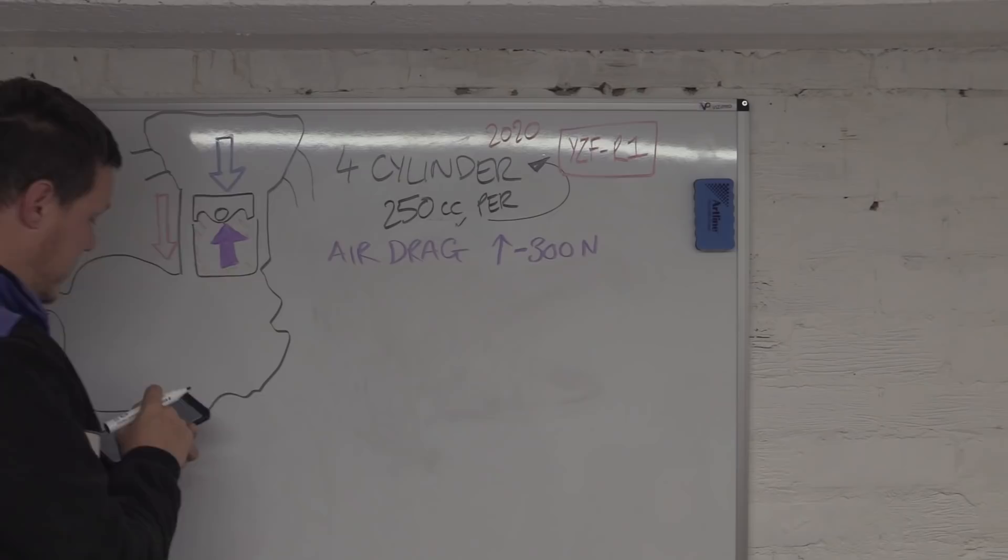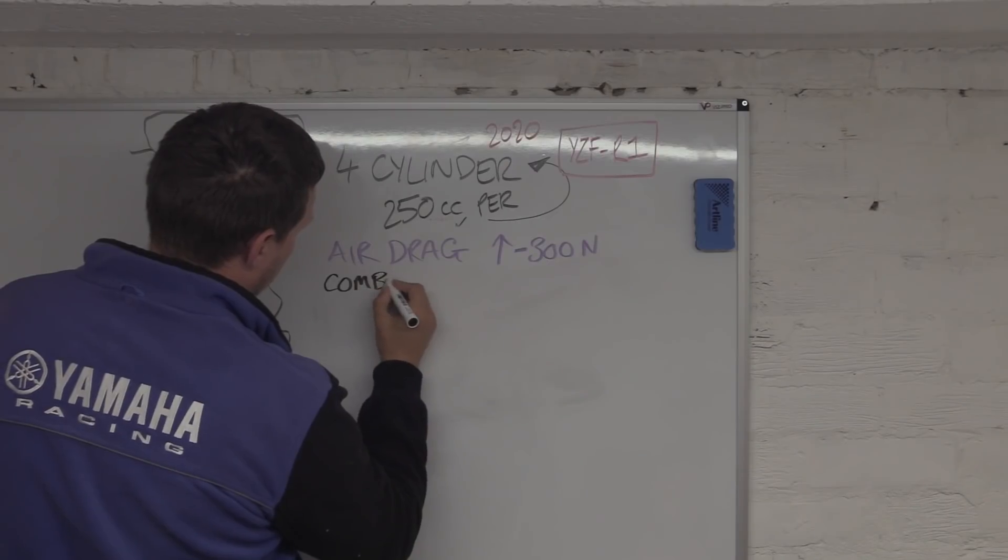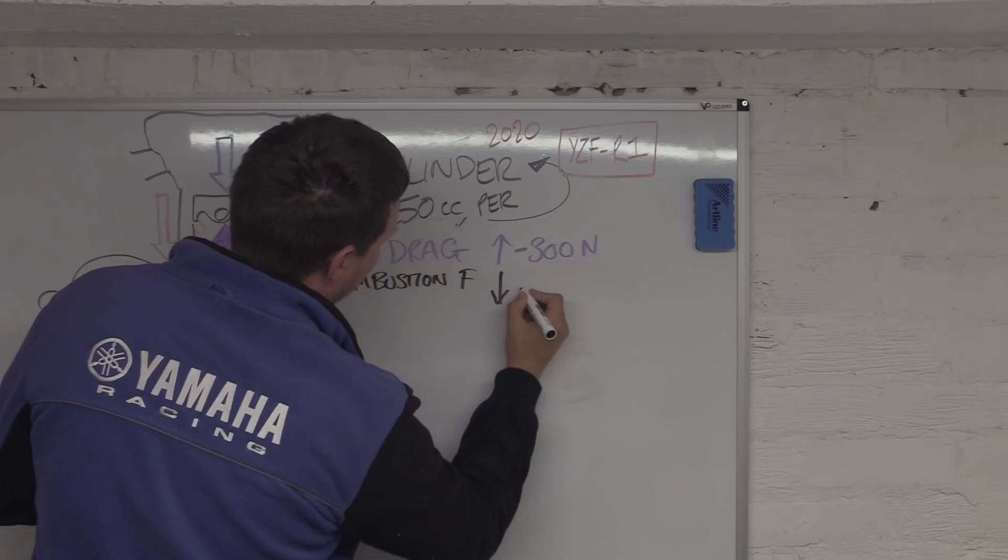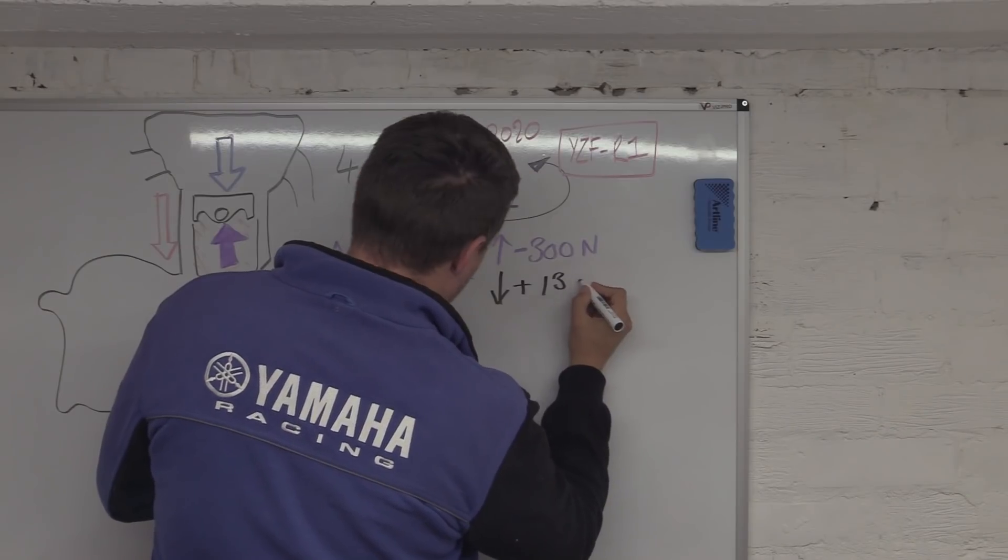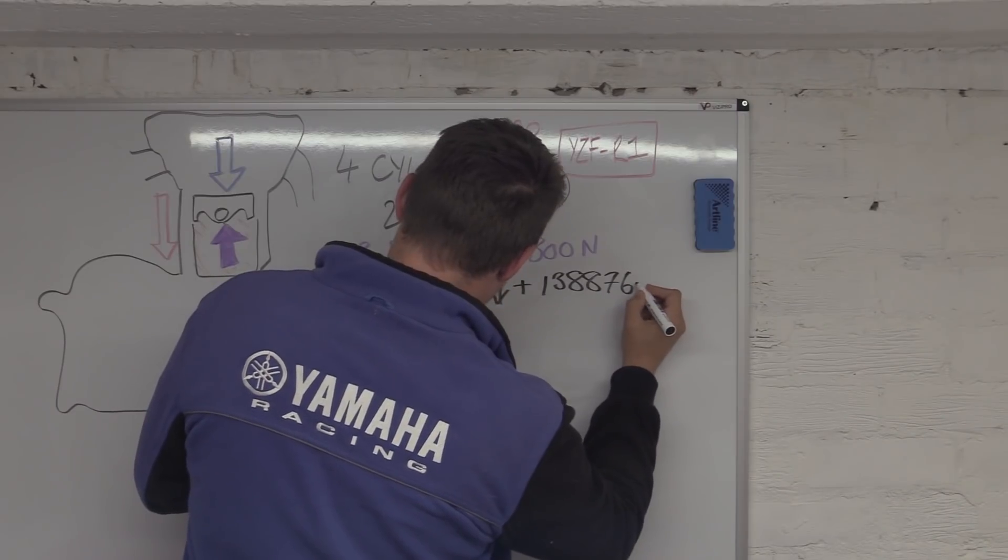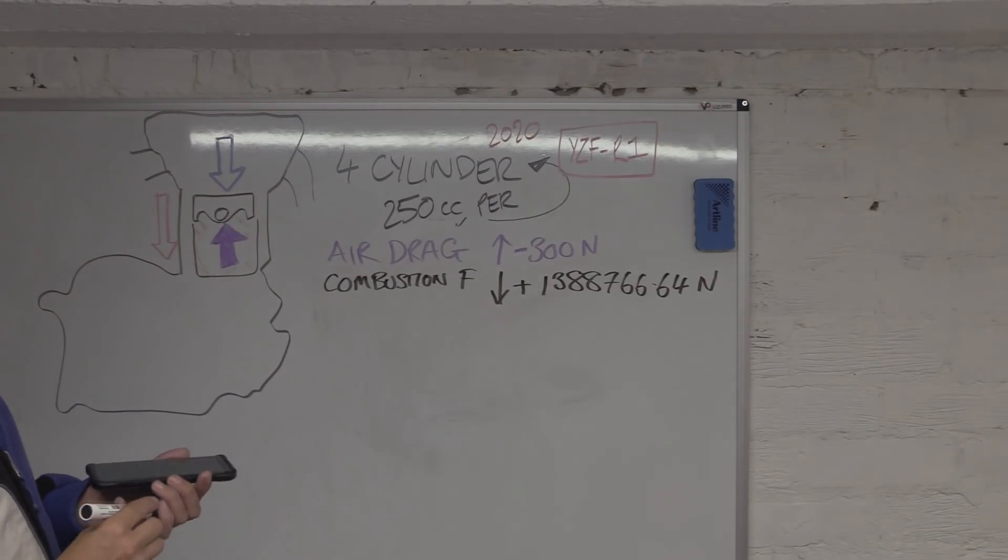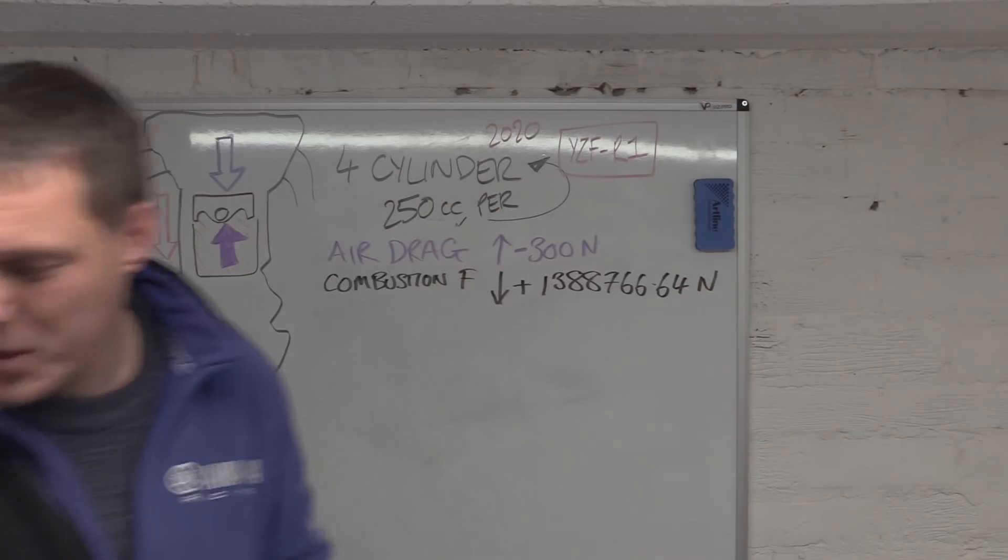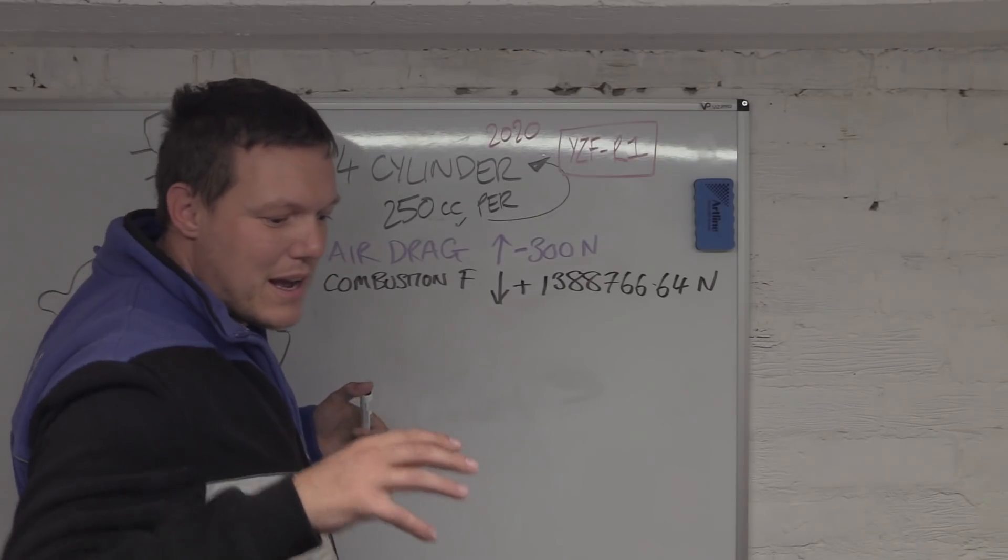The drag force there is resisting us like that, and then if you put the pressure curve in and all that rubbish on the way down, we get the combustion force, the combustion force that pushes the piston down, which is positive in a sense because that's what we want to go, is 1,388,766.64 newtons. Hang about, that's a big number isn't it?